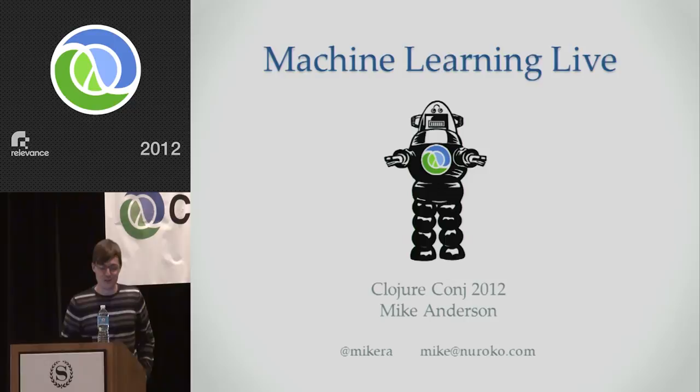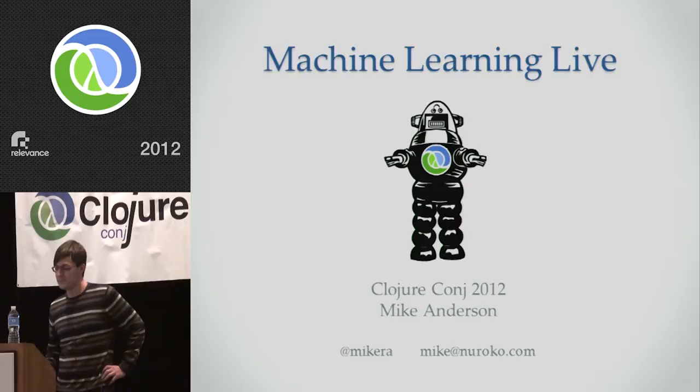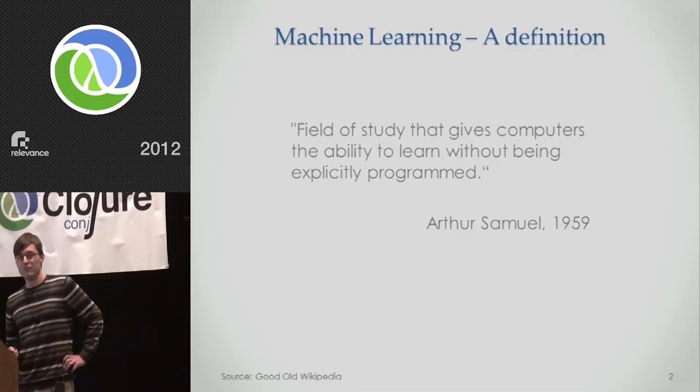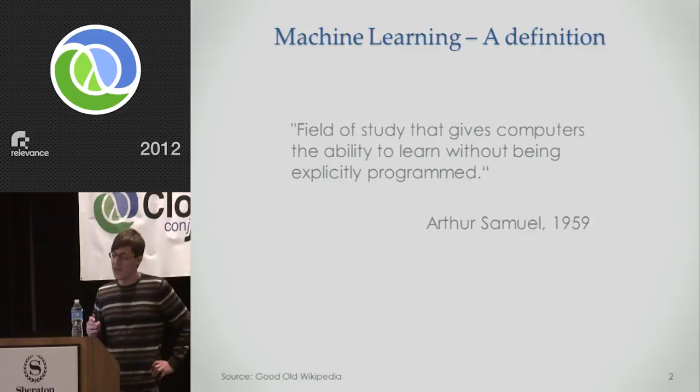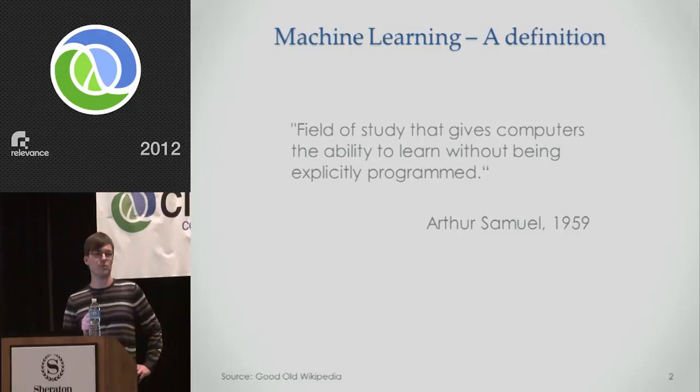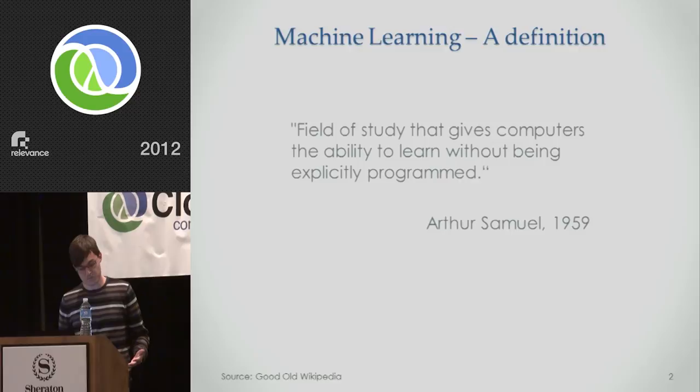I think it's always good to start with a definition. So I naturally went to Wikipedia and pulled off the first thing I could find. Machine learning is the field of study that gives computers the ability to learn without being explicitly programmed. The quote's over 50 years old, but I think it's actually still a pretty good definition. What we're interested in is getting our computers to learn to do useful things without you having to explicitly tell them every single task. Because in large complex data, that rapidly becomes impossible.